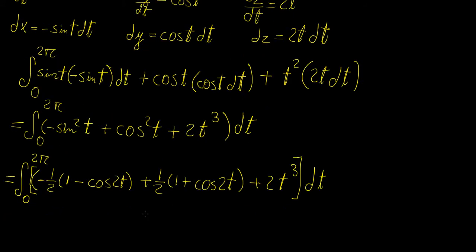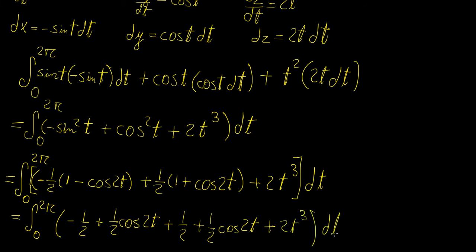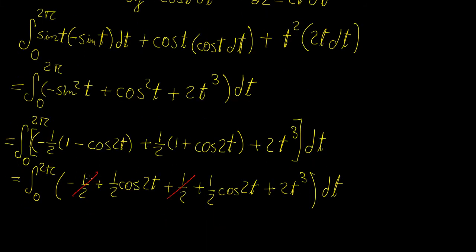All right, so let's see what we get from this. Let's just expand this out. So this becomes minus half. This becomes plus half of cosine 2t. This one here is going to be plus half plus half of cosine 2t. And then plus 2t cubed. So immediately we notice that this term and that term are going to cancel out. And then we can add these two up, so that's going to be replaced by the following.